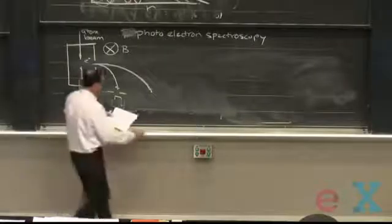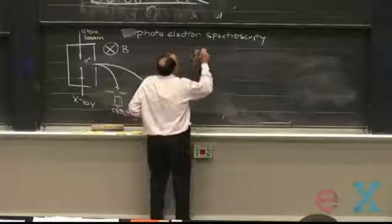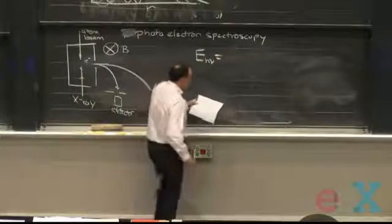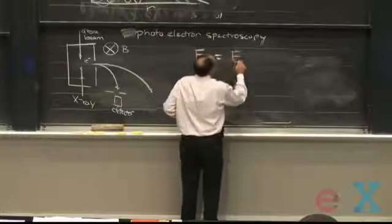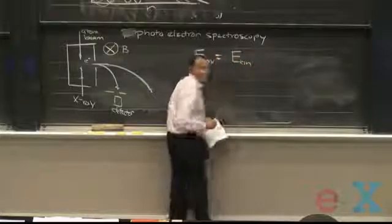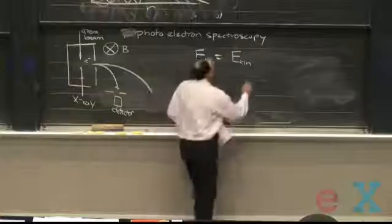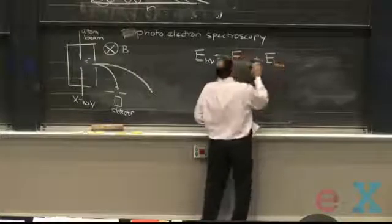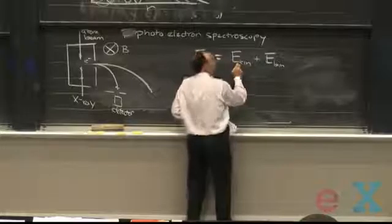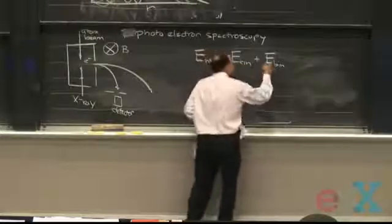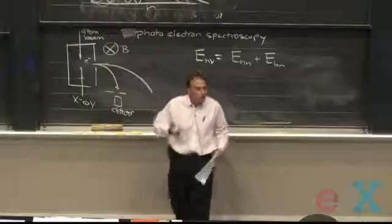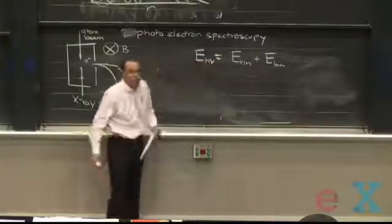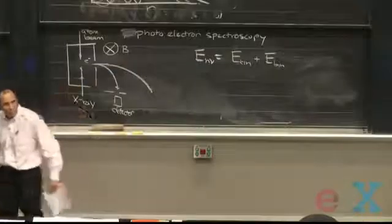Now, if we do an energy balance, we have the energy of the photon coming in. We have the kinetic energy of the electron that left. And that had better equal the binding energy of that electron. Or sorry, the sum of the kinetic energy of the electron plus the binding energy, the energy required to remove it from the atom, had better equal the energy of the photon that we used to smack into the atom.